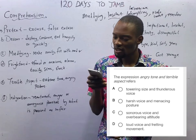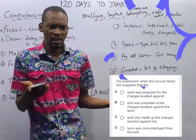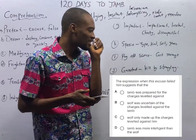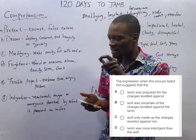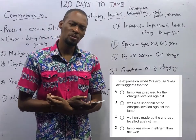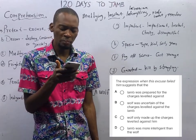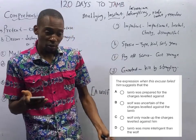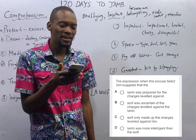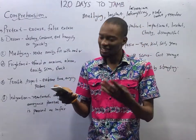The expression 'when this excuse failed him' suggests that: Option A — the lamb was prepared for the charges — is wrong, the lamb wasn't prepared. Option B — the wolf was uncertain of the charges — is wrong, because the wolf knew what he was doing and made them up. Option C — the wolf only made up the charges — is correct: he was certain of what he wanted, he was looking for a means to an end. Option D — the lamb was more intelligent than the wolf — is wrong; the wolf still got what he wanted.